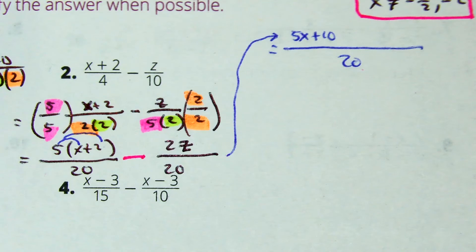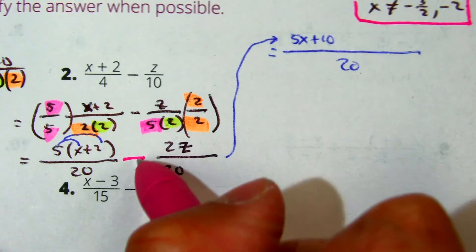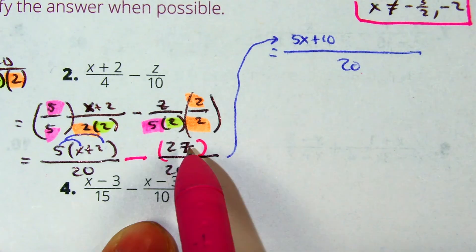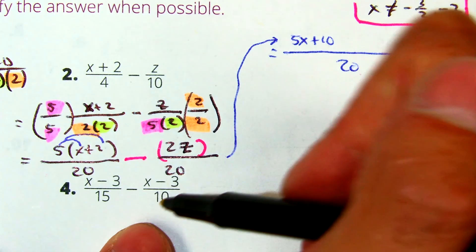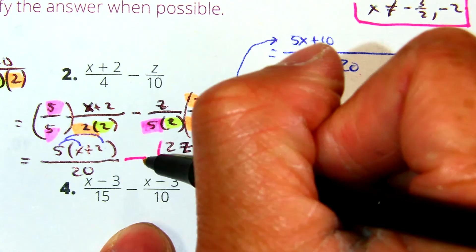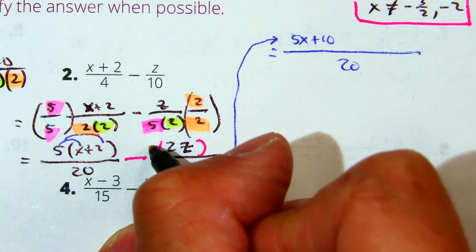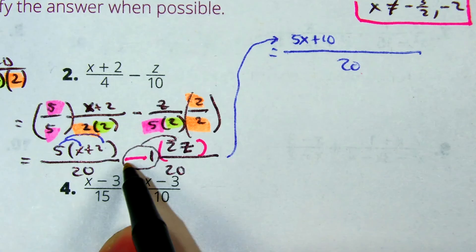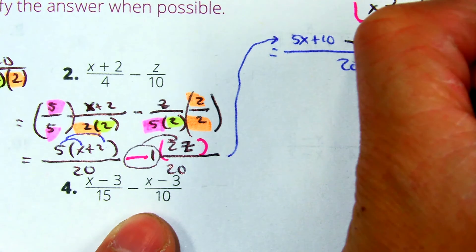Here's the tricky part. Any subtractions here, you're going to have to distribute this negative sign. This negative sign is like a negative 1. So now let's distribute this negative 1. Class, what's negative times a positive expression? So this will become negative 2z.